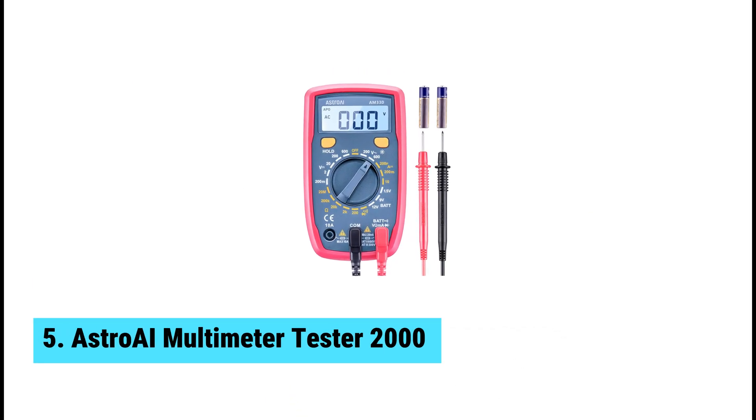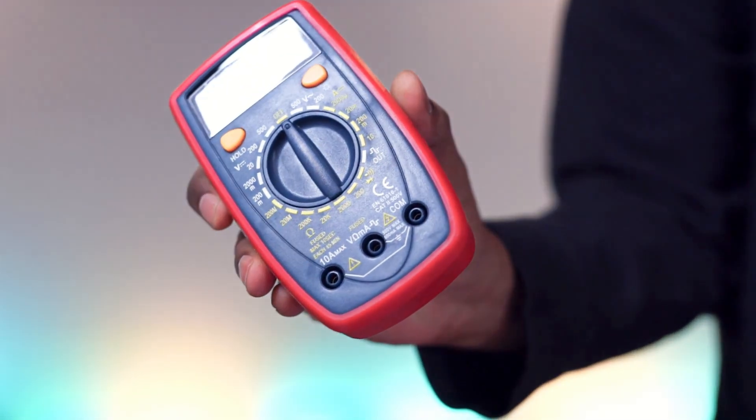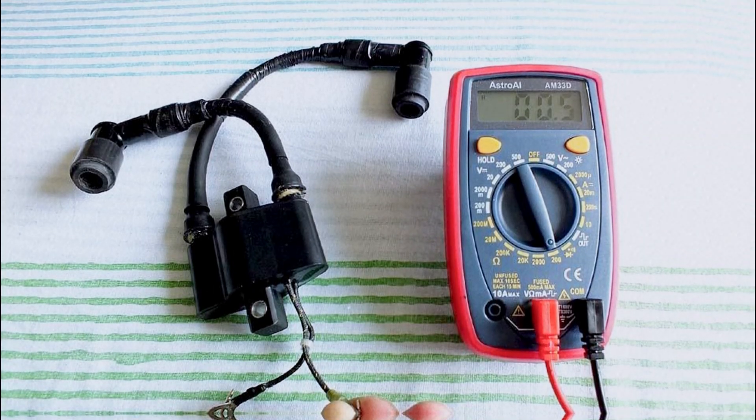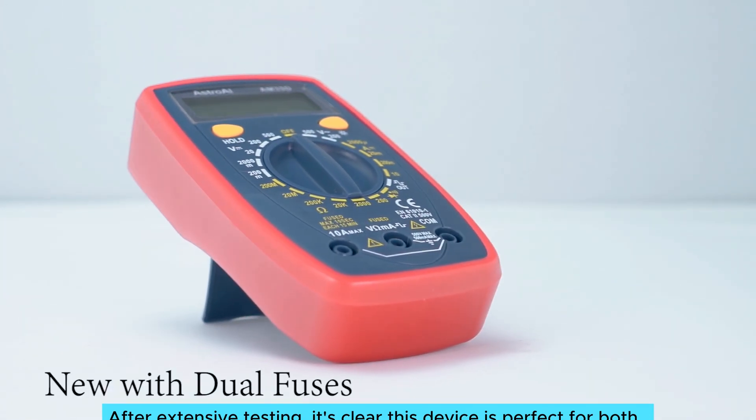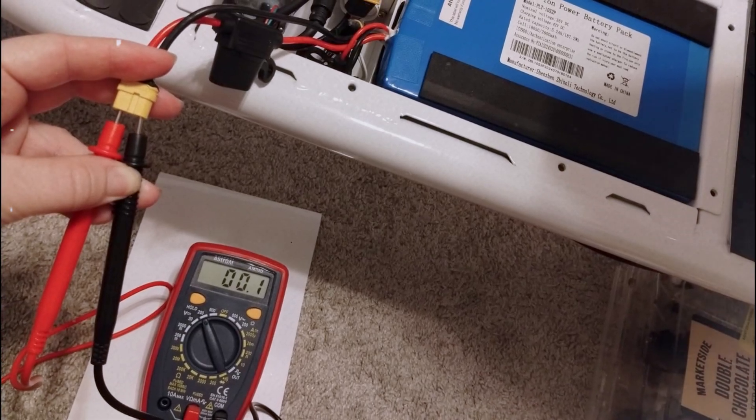At number 5, we have AstroAI Multimeter Tester 2000, the best budget digital multimeter. Need a reliable multimeter without emptying your wallet? AstroAI Multimeter Tester 2000 stands out as the best budget digital multimeter on the market. After extensive testing, it's clear this device is perfect for both beginners and seasoned DIYers.